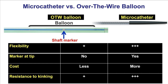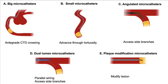Many people wonder whether a microcatheter is needed or whether an over-the-wire balloon would be sufficient. An over-the-wire balloon can be used instead, but it has some disadvantages. Microcatheters are much more flexible, and importantly, the microcatheter has a marker at the tip, so we know exactly where the tip is located at any given moment. In contrast, 1.5 mm small balloons — the most commonly used — have the marker in the middle, so the tip location is less certain. Microcatheters are also much more resistant to kinking. The one advantage of over-the-wire balloons is that they cost less.